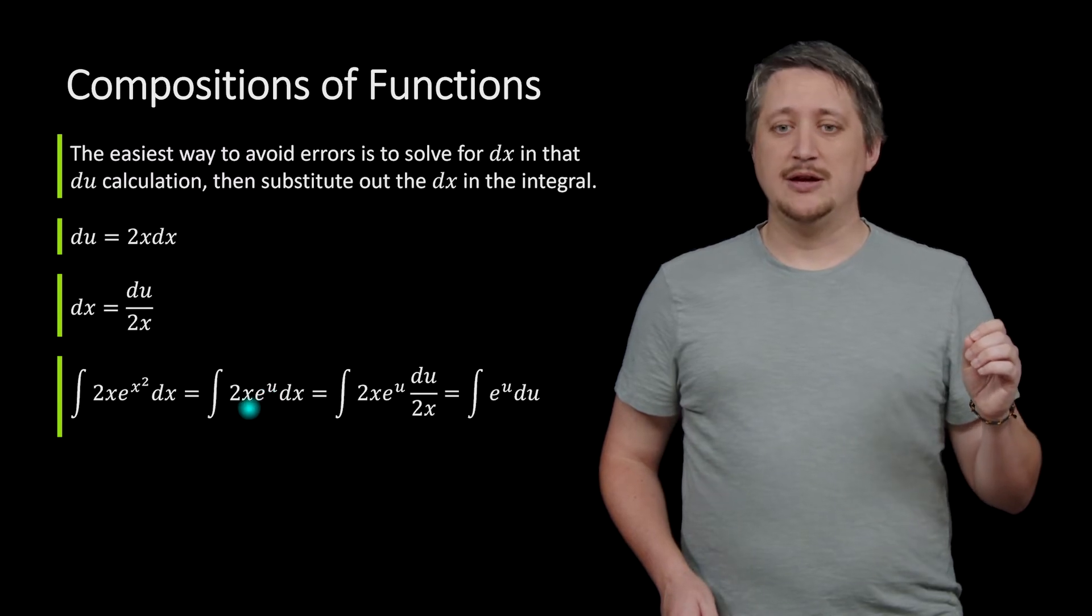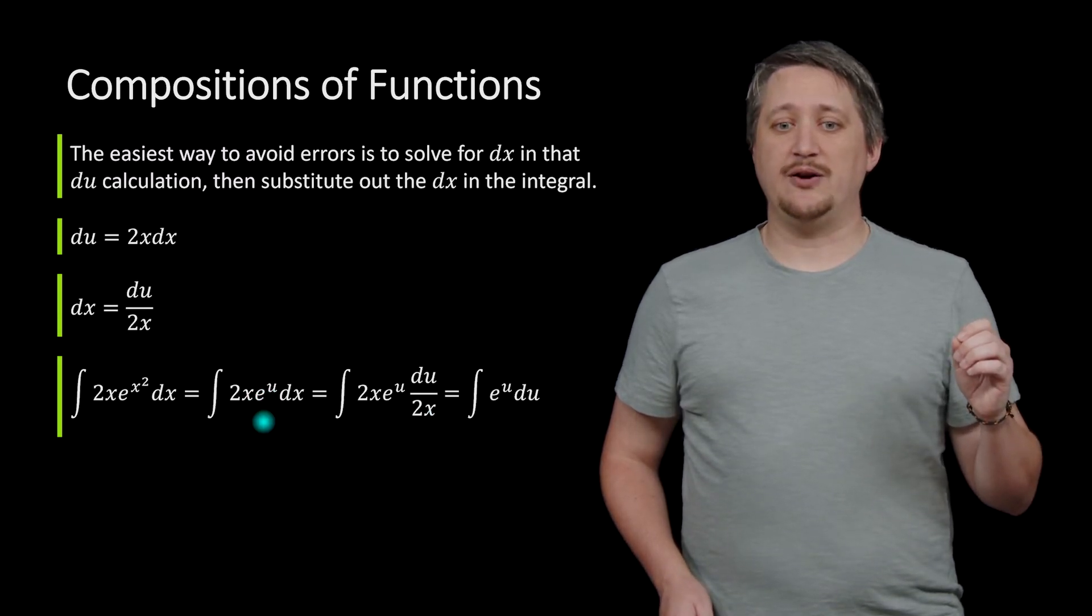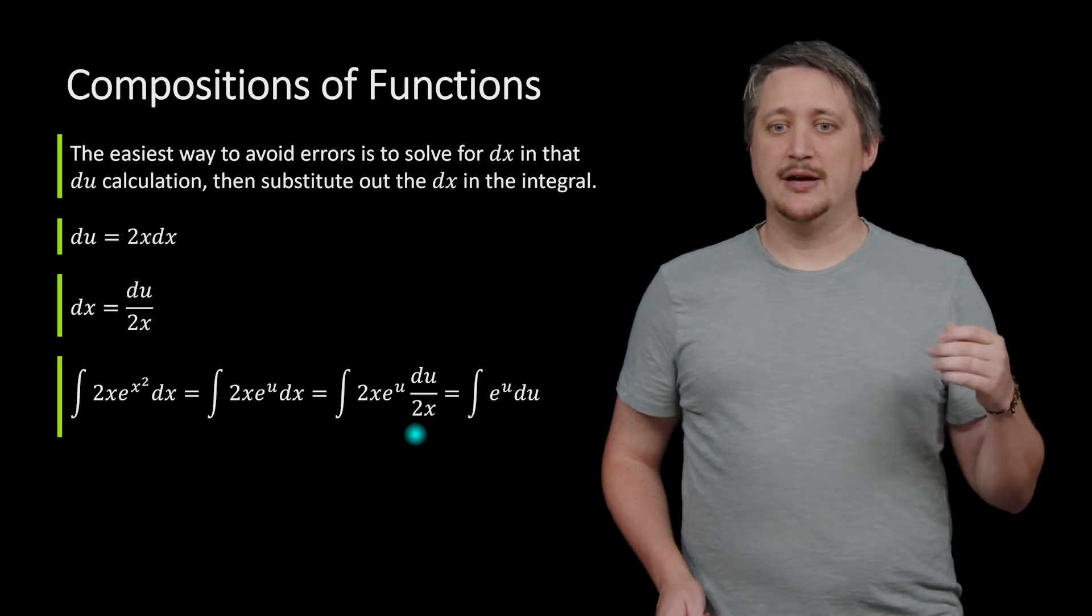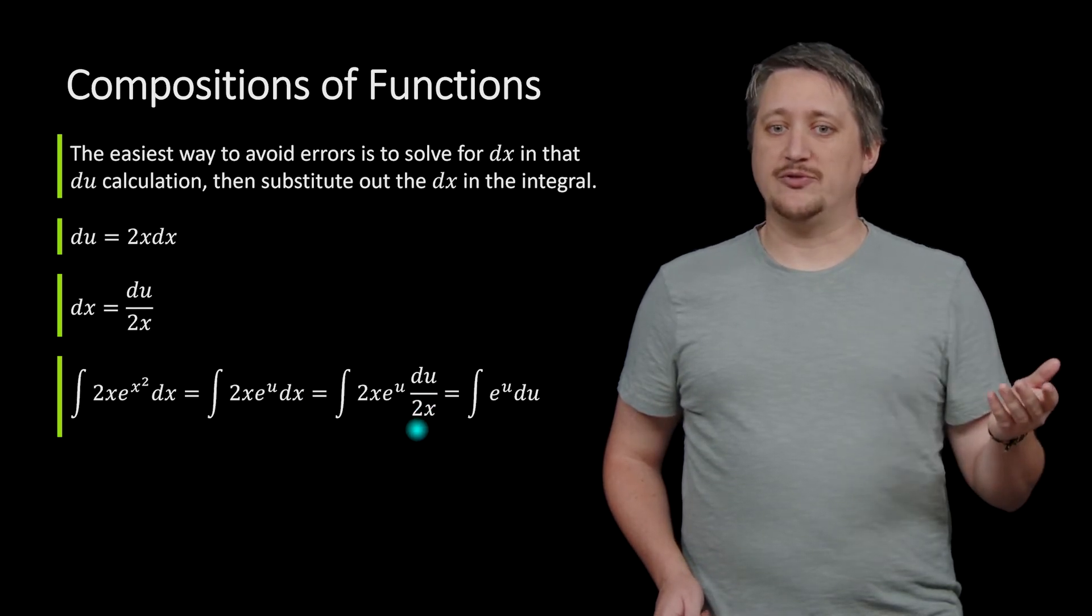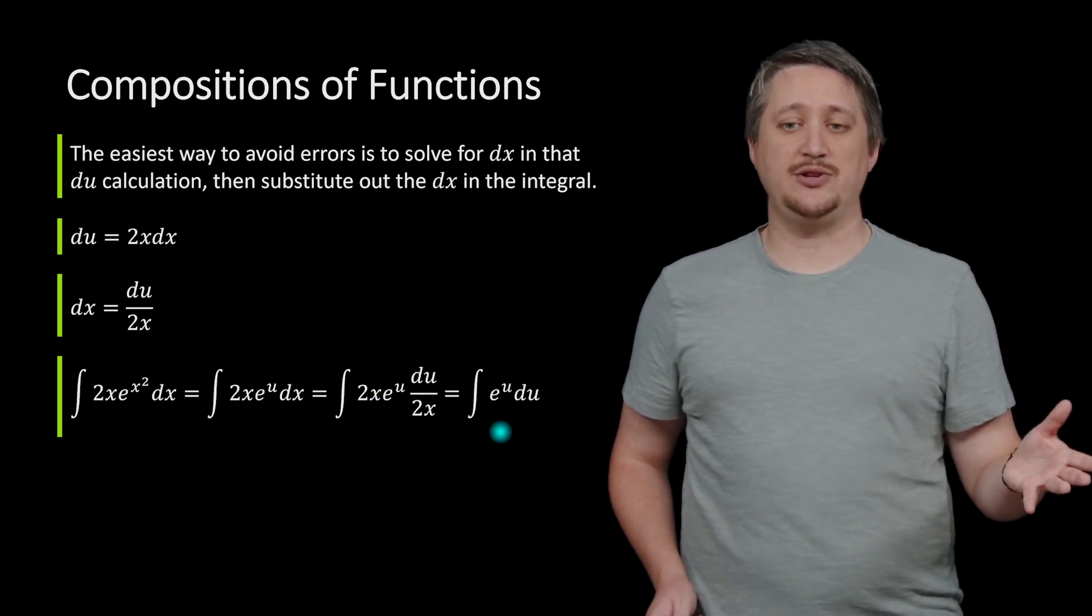And then I'm going to substitute out the dx to be what I solve for, that du over 2x. And then I try to simplify. So here I have a 2x in the bottom, a 2x in the top, so those cancel out, and I get just e to the u du.